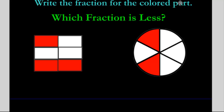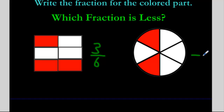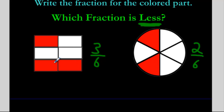Write the fraction for the colored part, then decide which fraction is less. Our denominator for both is six — there are six pieces altogether. The first one has three colored red pieces, giving us three over six. The second one has two colored pieces, giving us two over six. Which one has more colored pieces is the greater one; which has less colored pieces is the lesser one. Two out of six is less, so two over six is the answer.